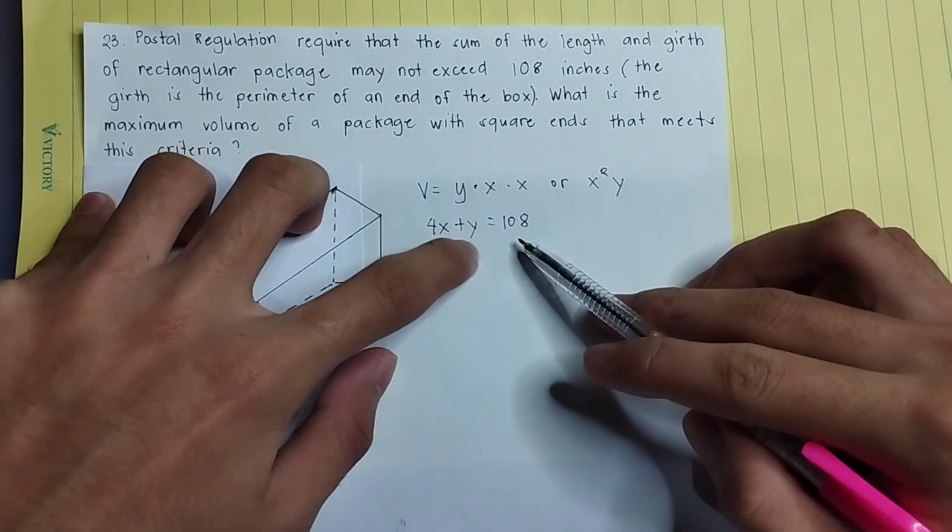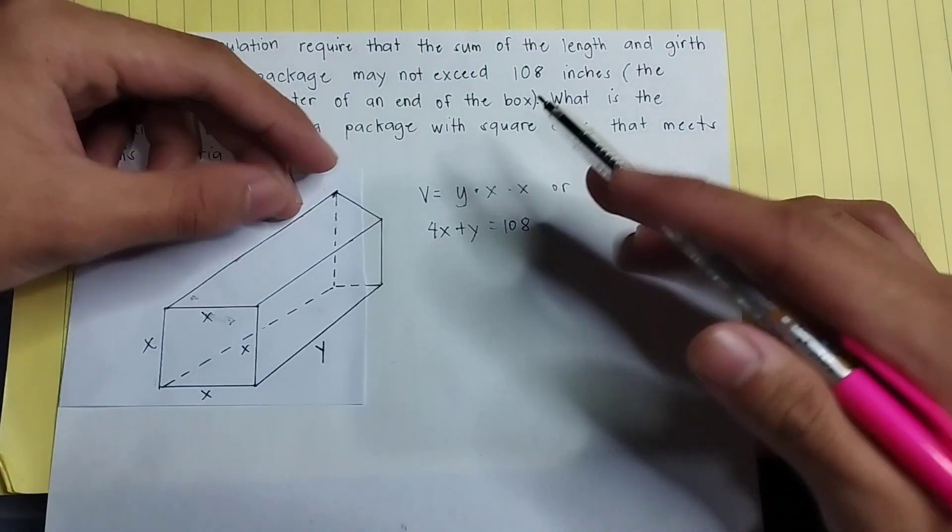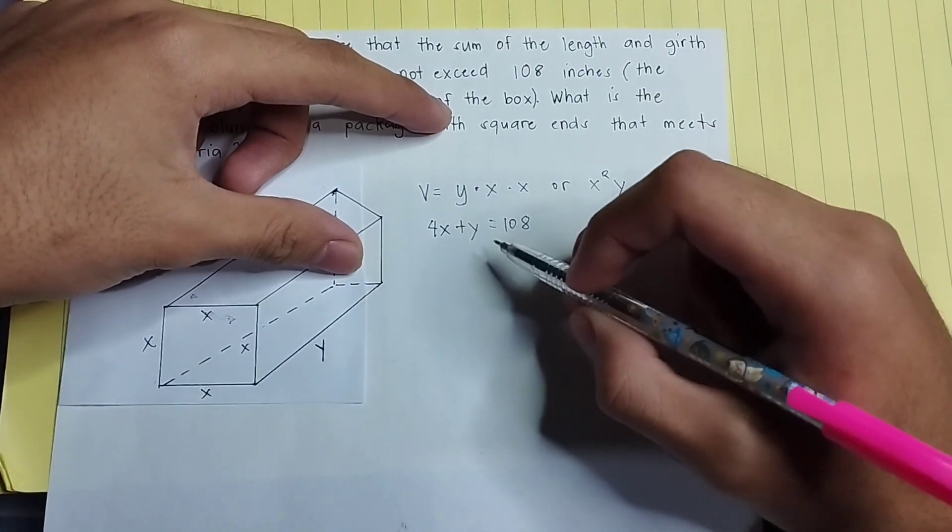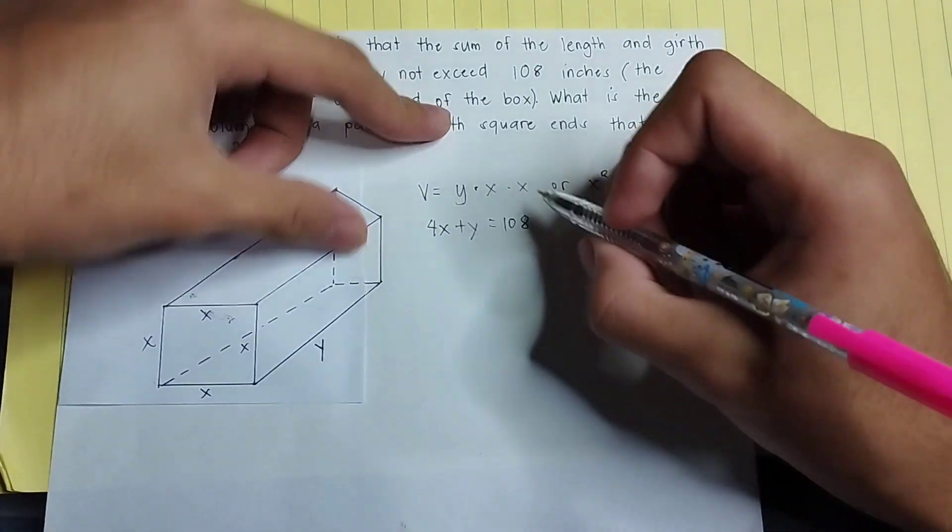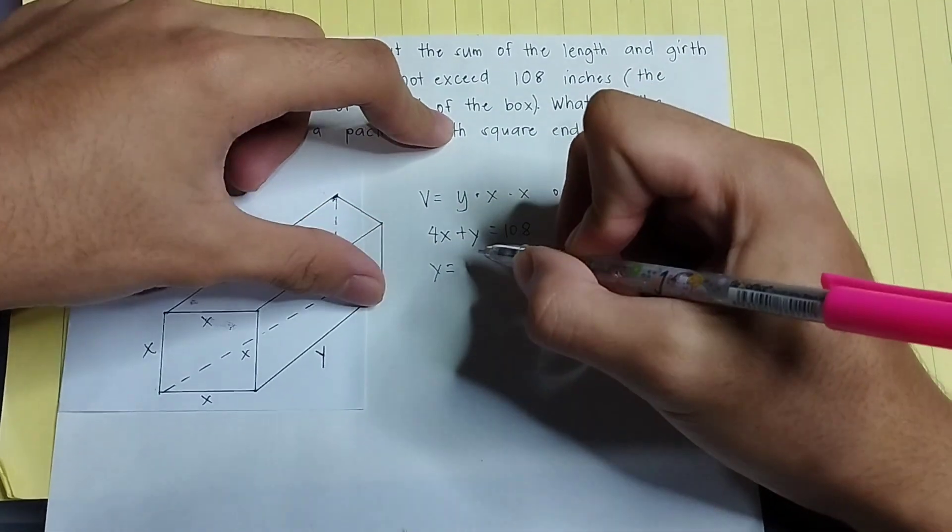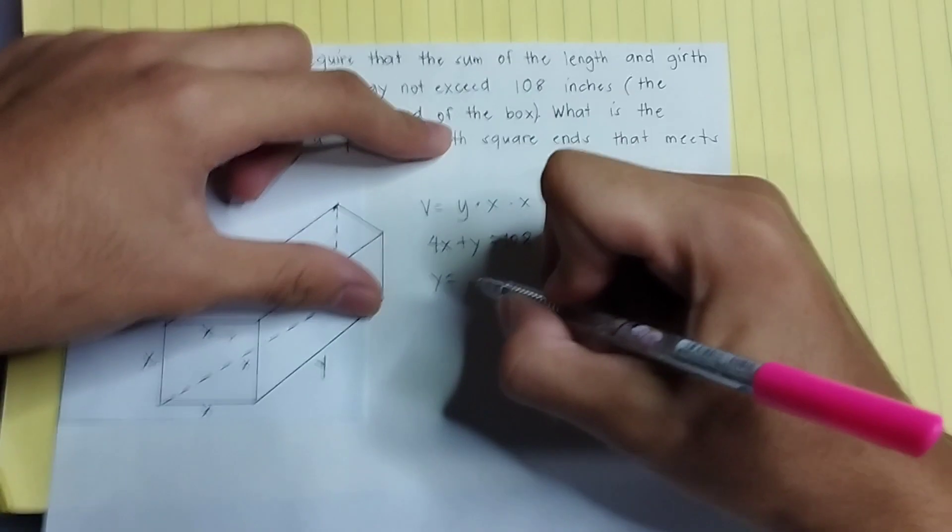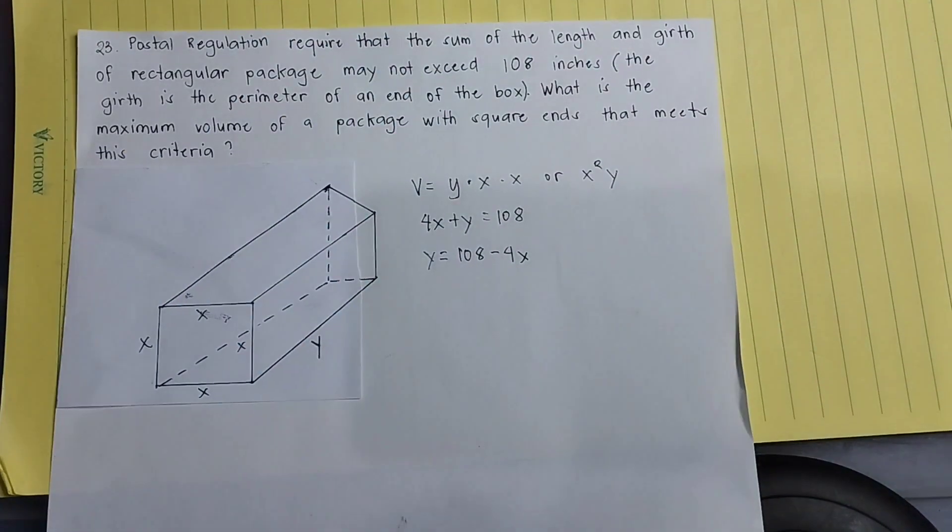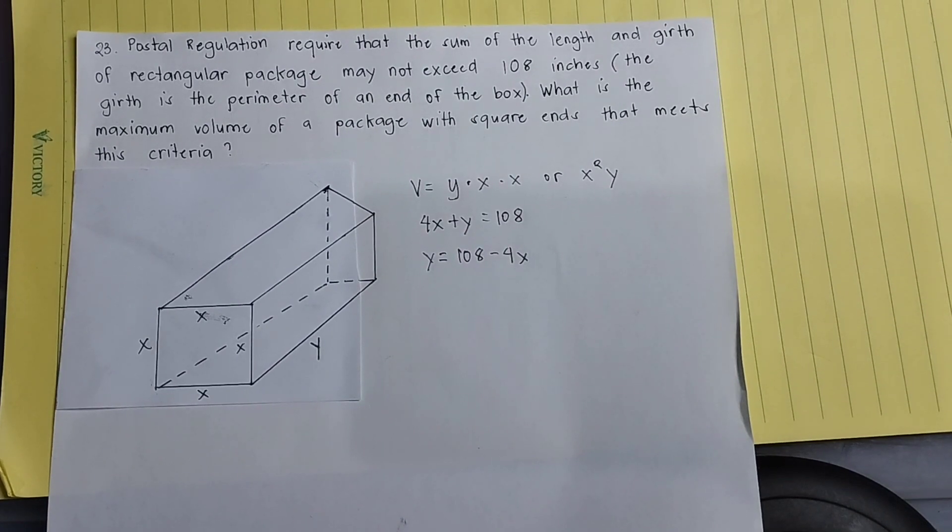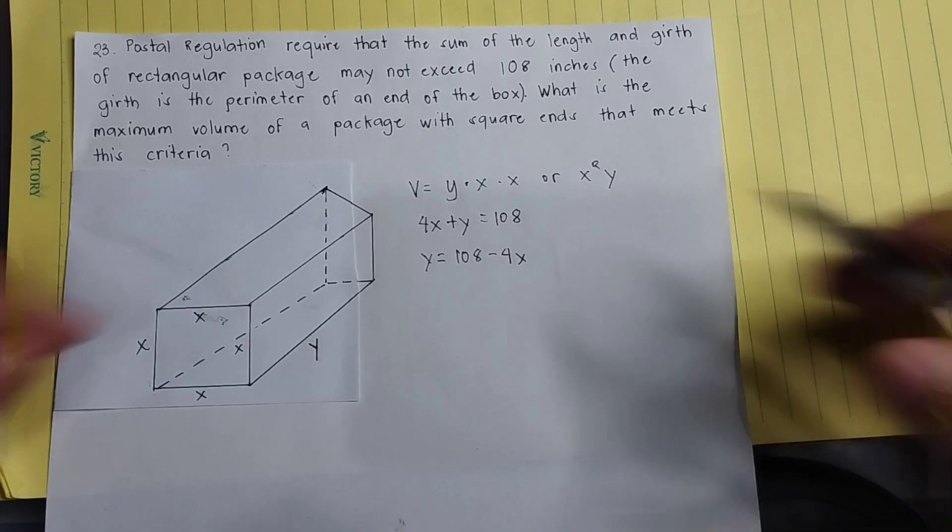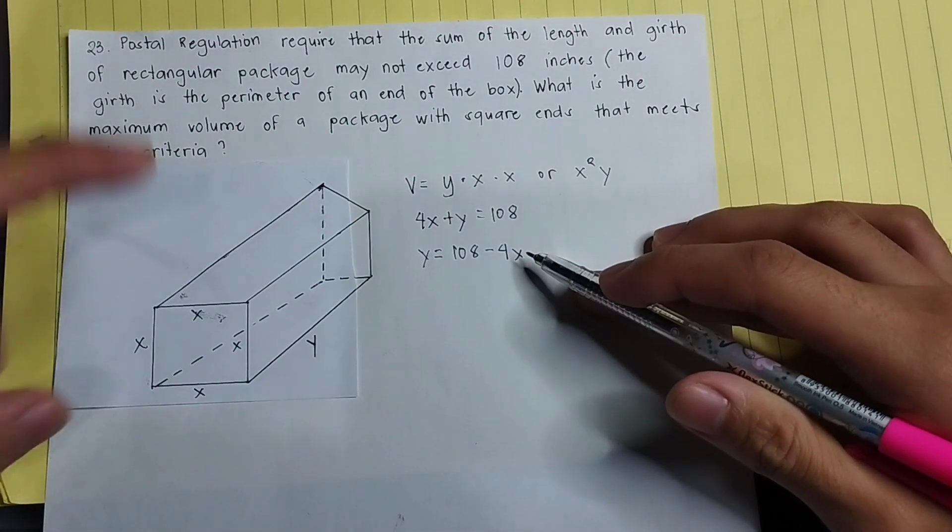So the sum of the length and the girth may not exceed 108 inches. That's why I equal it to 108 inches. And then we can transform this formula into y equals 108 minus 4x, since we transpose the formula into y.